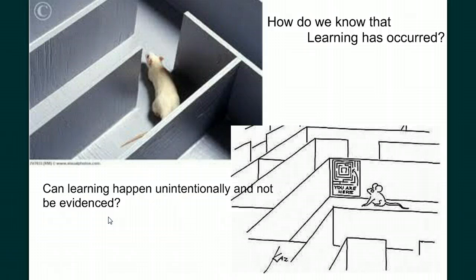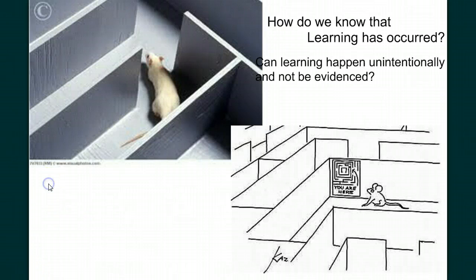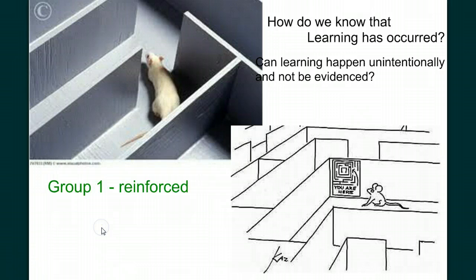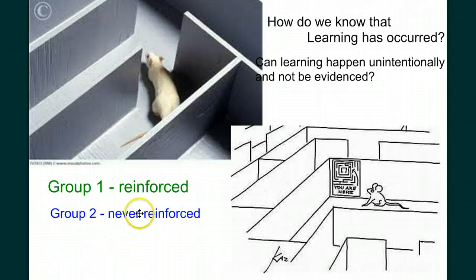Let's look at an interesting experiment conducted by Edward Tolman. In this experiment, Tolman used three groups of rats. One group of rats was given reinforcers to reward their behavior of solving a maze. Over many trials, they made fewer and fewer mistakes as they learned their way through the maze and to the food. Another group was put through the same trials, but they were never reinforced upon finishing the maze. As you might predict, they made many more mistakes throughout the experiment and failed to truly master the maze.